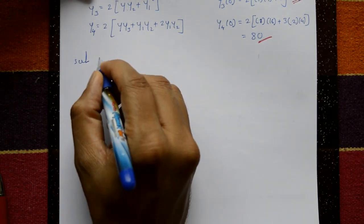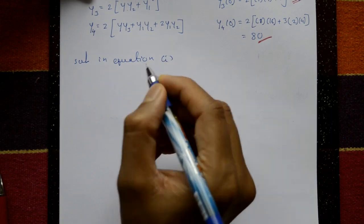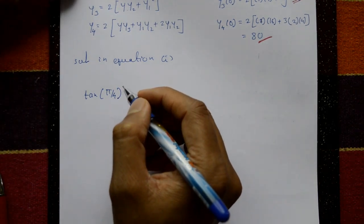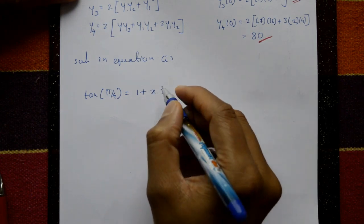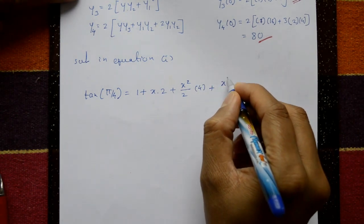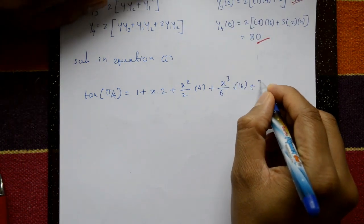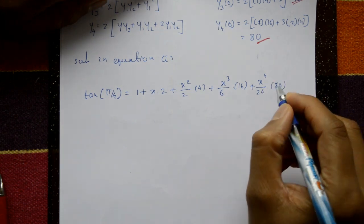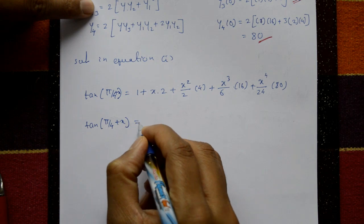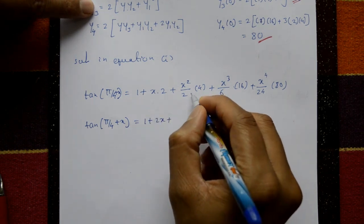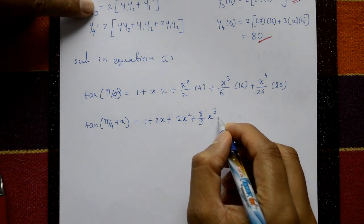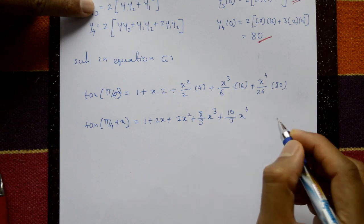Substituting into equation 1: tan(π/4 + x) = 1 + x×2 + x²/2×4 + x³/6×16 + x⁴/24×80, which simplifies to: tan(π/4 + x) = 1 + 2x + 2x² + (8/3)x³ + (10/3)x⁴. This is the required answer.